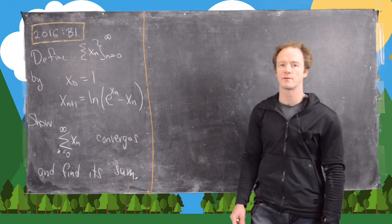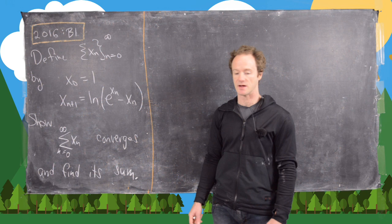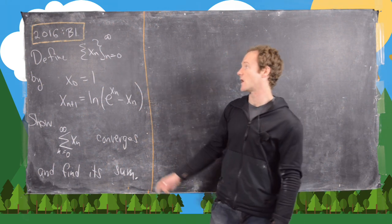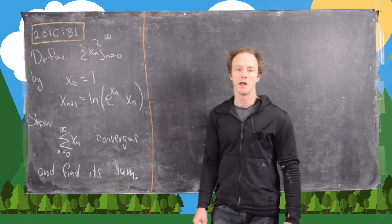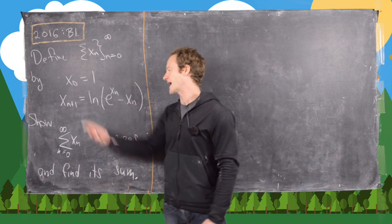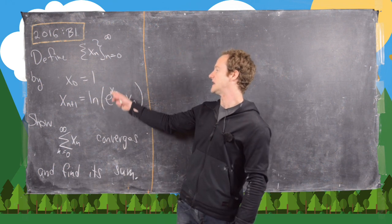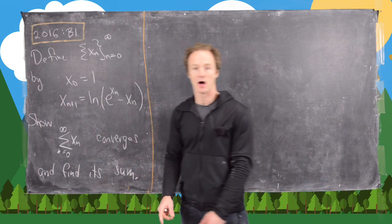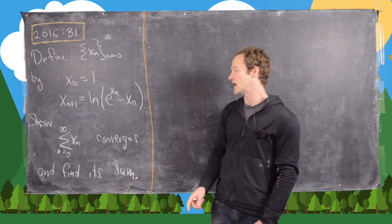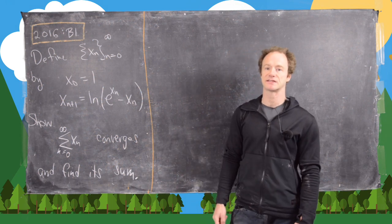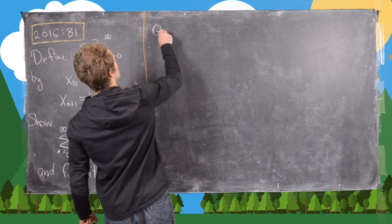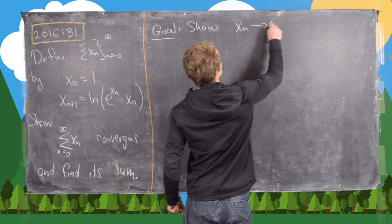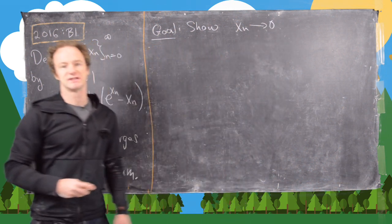In this video we're going to look at problem B1 from the 2016 Putnam exam. We want to define this sequence of numbers as follows: x₀ is equal to 1, and then we have the recursion xₙ₊₁ = ln(eˣⁿ - xₙ). We want to show that the series of xₙ converges and find its sum. Our first goal is to show xₙ as a sequence converges to 0.